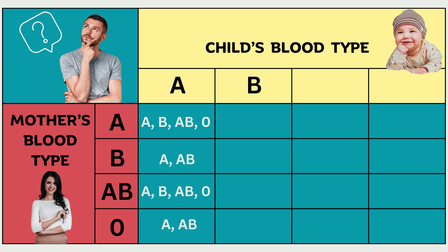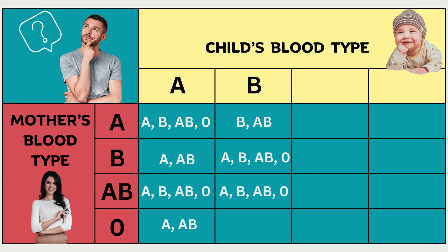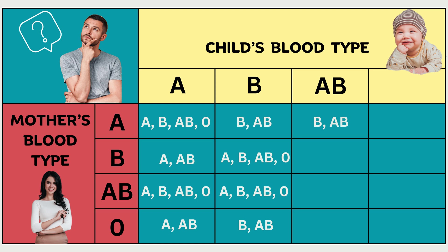For a child with blood type B and a mother with blood type A, the potential father could have B or AB blood type. If both the mother and the child are blood type B, the father's blood group could be any of the four possible options: A, B, AB, or O. Similarly, for a child with blood type B and a mother with blood type AB, the father could once again belong to any of the four blood groups. In a scenario where the child has blood type B and the mother's blood type is O, the father could be blood type B or AB. If the child has blood type AB and the mother has blood type A, the father's blood group could be B or AB.